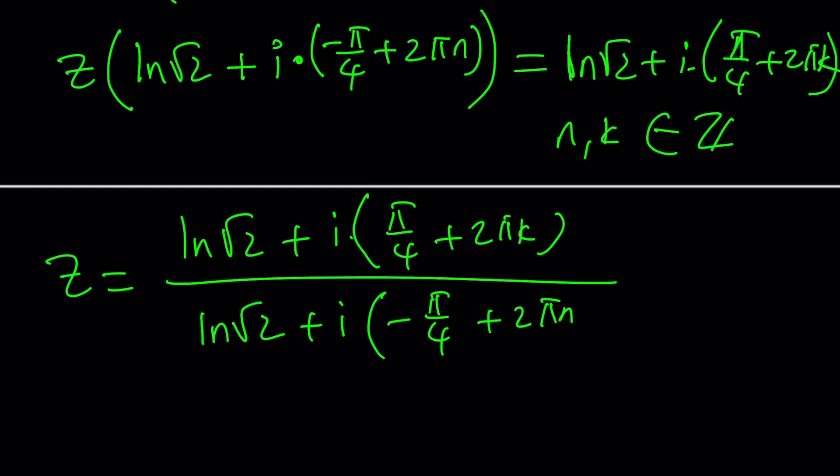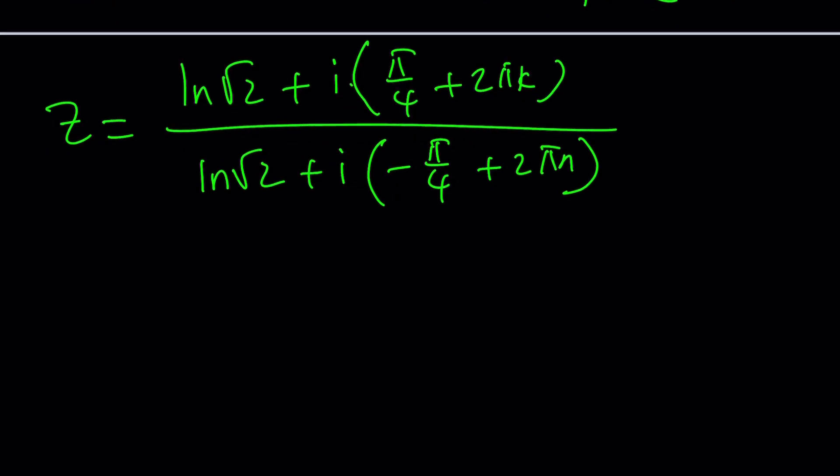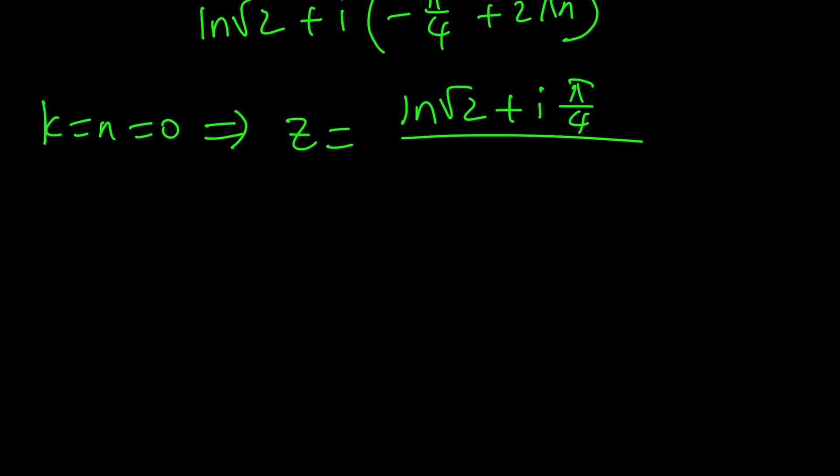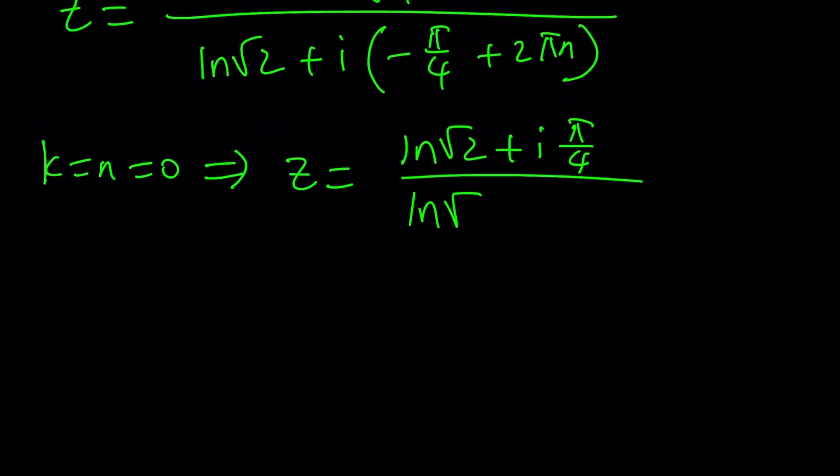From here, we can basically safely say that z equals ln root 2 plus i times pi over 4 plus 2 pi k, and then that is divided by ln root 2 plus i times negative pi over 4 plus 2 pi n. We could probably think about, what if k and n are both 0? Yes, that's possible. If they're both 0, then we kind of get the simplest form, z equals ln root 2 plus i pi over 4. Again, this is a complex number in a plus bi form, which is the standard form. And the denominator will be ln root 2 minus i times pi over 4.